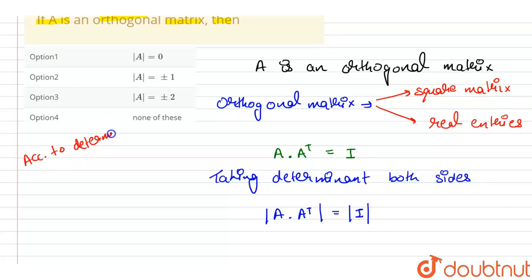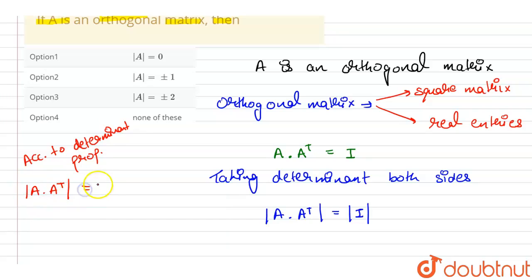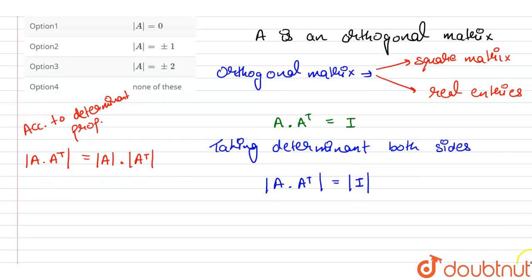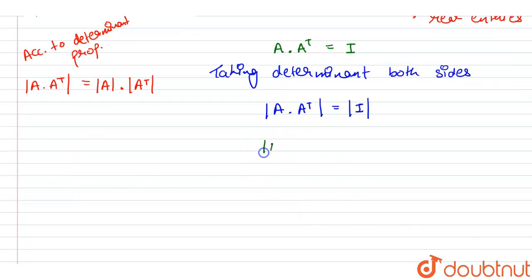According to the determinant property, the determinant of A into A transpose can be written as the determinant of A multiplied by the determinant of A transpose.